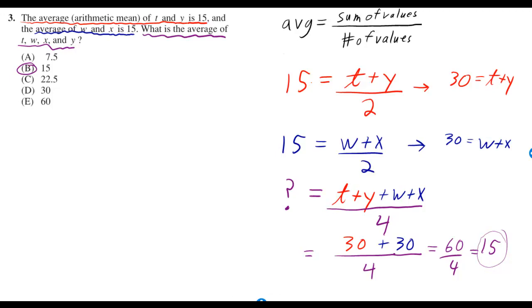But at the top equation in red, you can figure out that T plus Y is 30. You just multiply both sides by 2. The 2's cancel. Same for the blue. You can figure out that W plus X is 30.